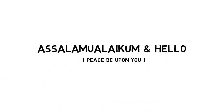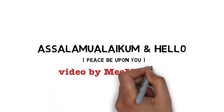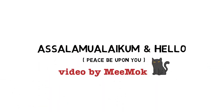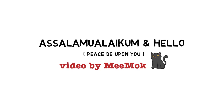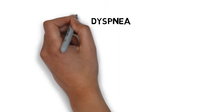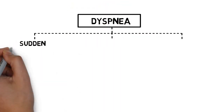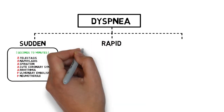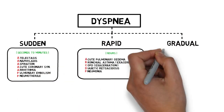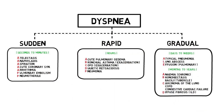Assalamualaikum and hello everyone. Welcome back to this channel for part 2 of dyspnea. Previously, we divided the causes of dyspnea into those which are sudden in onset, rapid, and gradual, and we covered some of the diseases from the first two groups.